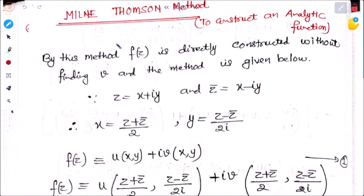Next is the Milne-Thomson method to construct an analytic function. In this method, f(z) is directly constructed without finding v first. That means without finding the unknown part, we can directly find f(z) in terms of z. It is called the Milne-Thomson method, and we will discuss its theory today.